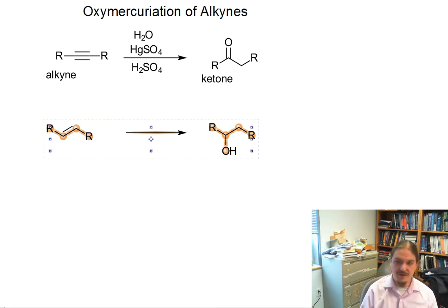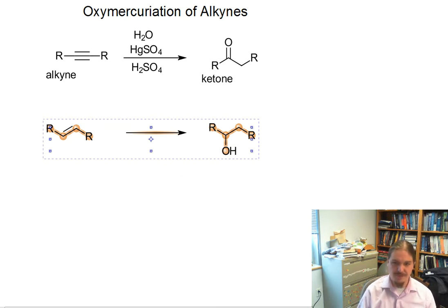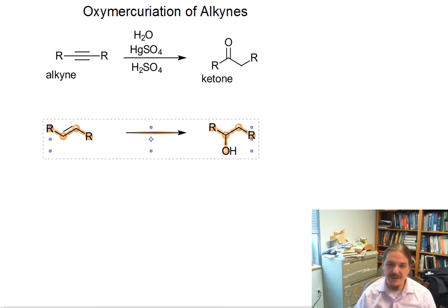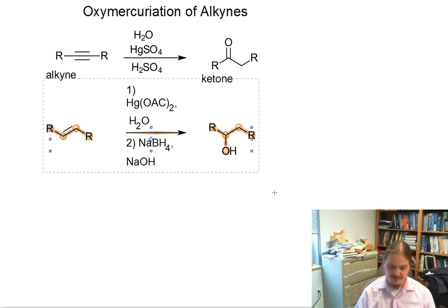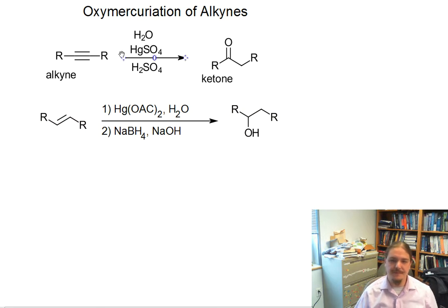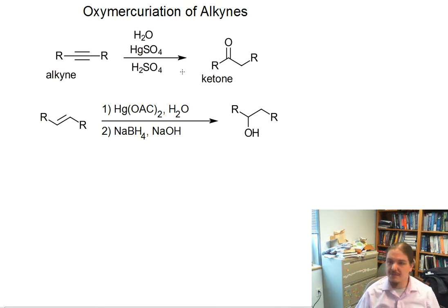The alkene version requires two separate steps. In the reaction of the alkene, we get the mercury stuck on there and we need to use sodium borohydride, a reducing agent, to take it off. Here's the alkene example. We'll talk about the mechanism of the alkyne version in a minute and see how it's different on the next slide.